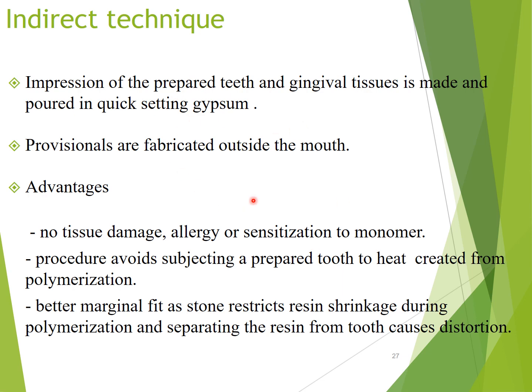For the indirect technique, an impression of the prepared teeth and gingival tissue is made and poured in quick-setting gypsum. The provisionals are fabricated outside the mouth. Advantages include no tissue damage, allergies, or sensitization to monomer since the material does not contact the patient. The procedure also avoids subjecting the prepared tooth to polymerization heat, and may have better marginal fit as the stone restricts resin shrinkage during polymerization.